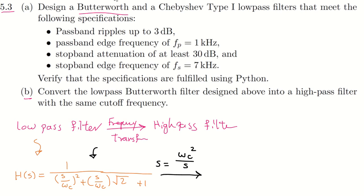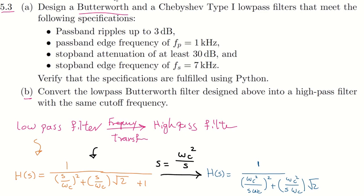So then we would have H(s) equal one over — instead of s I replace it with ωc²/s — so we would have (ωc²/s)/ωc + (ωc²/s)/ωc · √2 + 1 in the denominator, which simplifies to (ωc/s)² + (ωc/s)·√2 + 1.